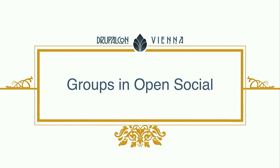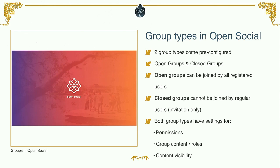When you install OpenSocial, you get two group types out of the box: open groups and closed groups. Open groups are free to join for all members of the community. Closed groups cannot be joined freely — you have to be added by the group manager. Both group types have pre-configured settings for permissions, group content (what kind of content can you add), some pre-defined roles you can assign to members, and obviously content visibility, which is the main distinction. Content placed in closed groups will not be shown in the timeline if you're not a member of the group.